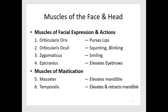Most of these muscles are paired, meaning one on the left and one on the right with the same name. Except the one around the mouth that helps us purse our lips, the orbicularis oris, is just one muscle around the mouth. In addition, the epicranius, which is on the forehead and helps us elevate our eyebrows, is also just one muscle.